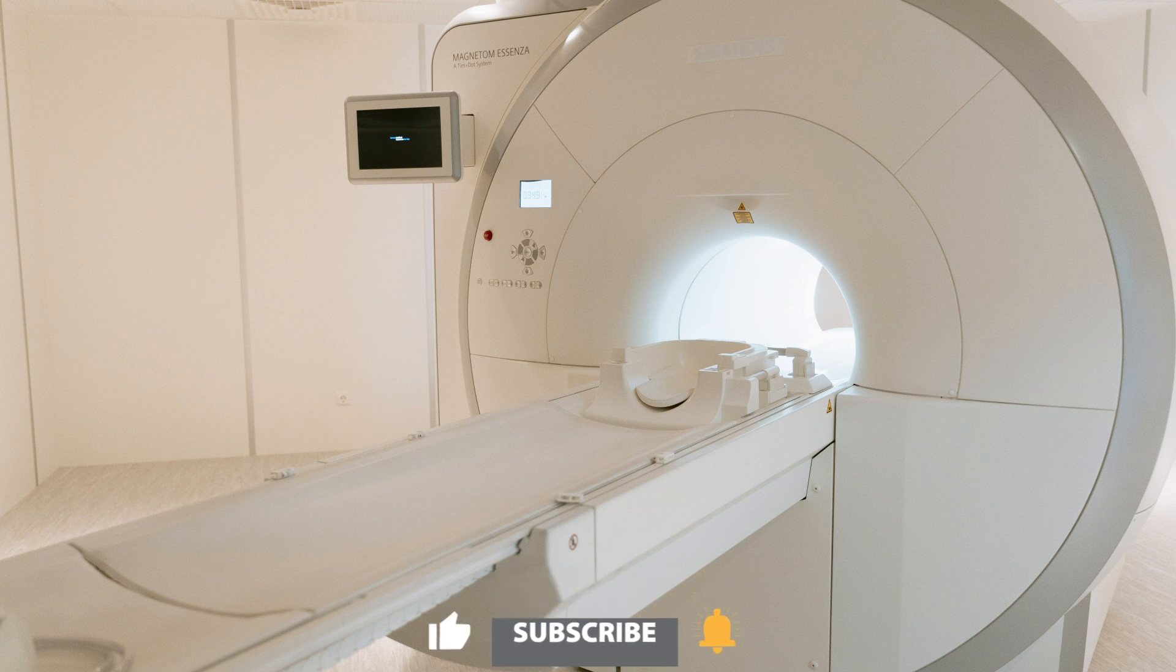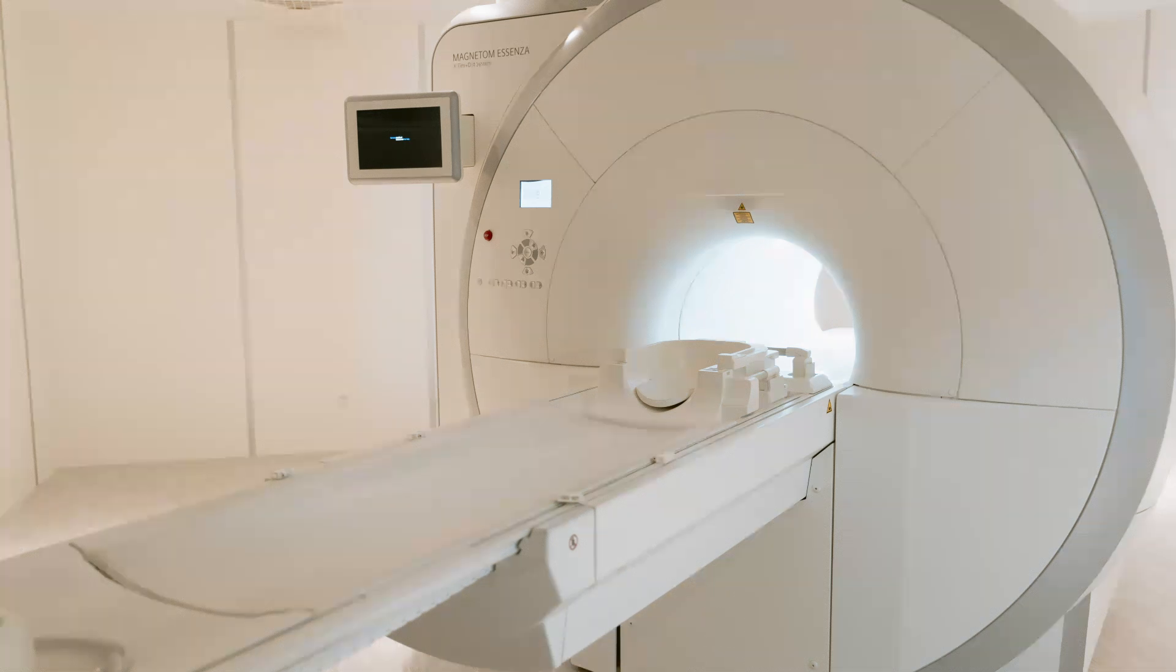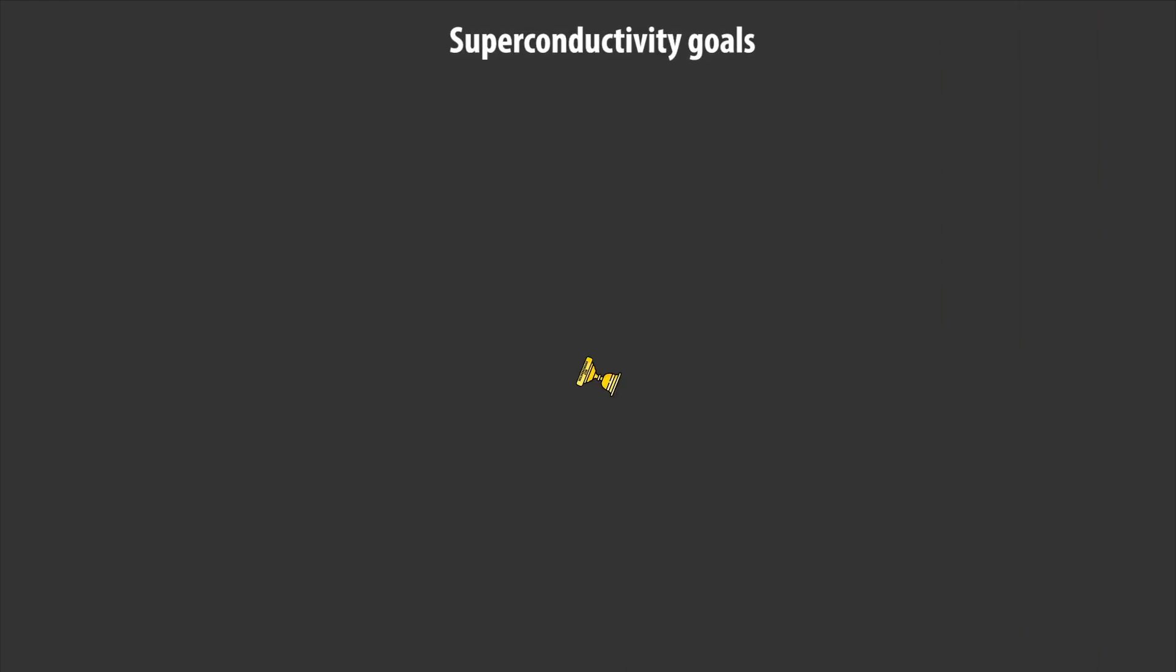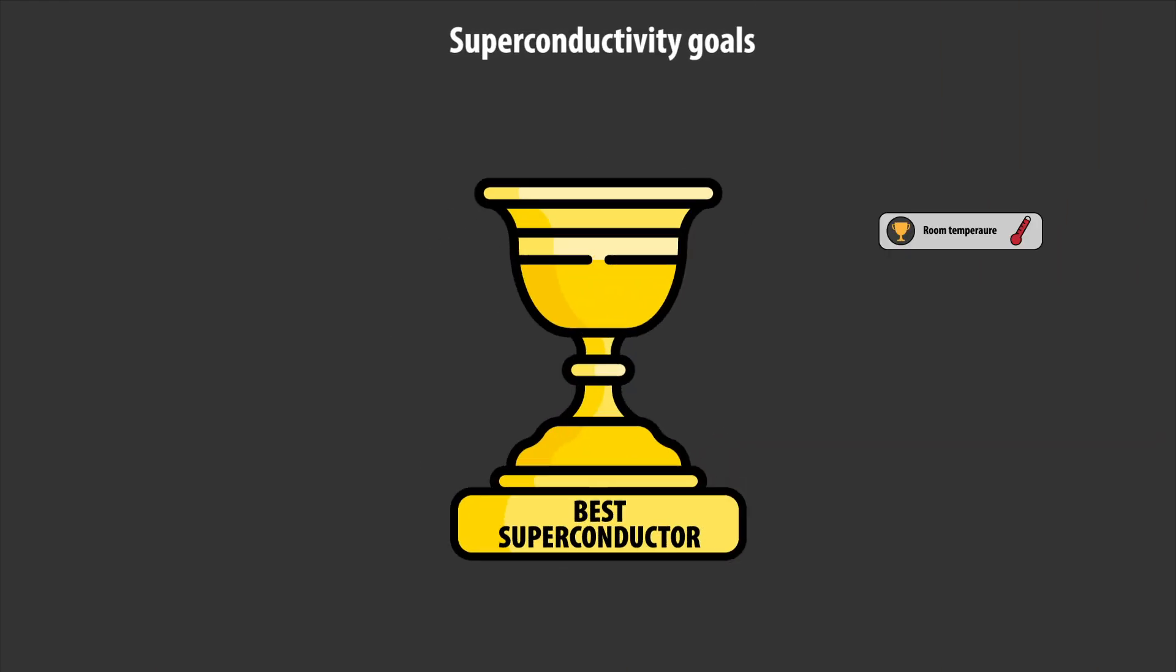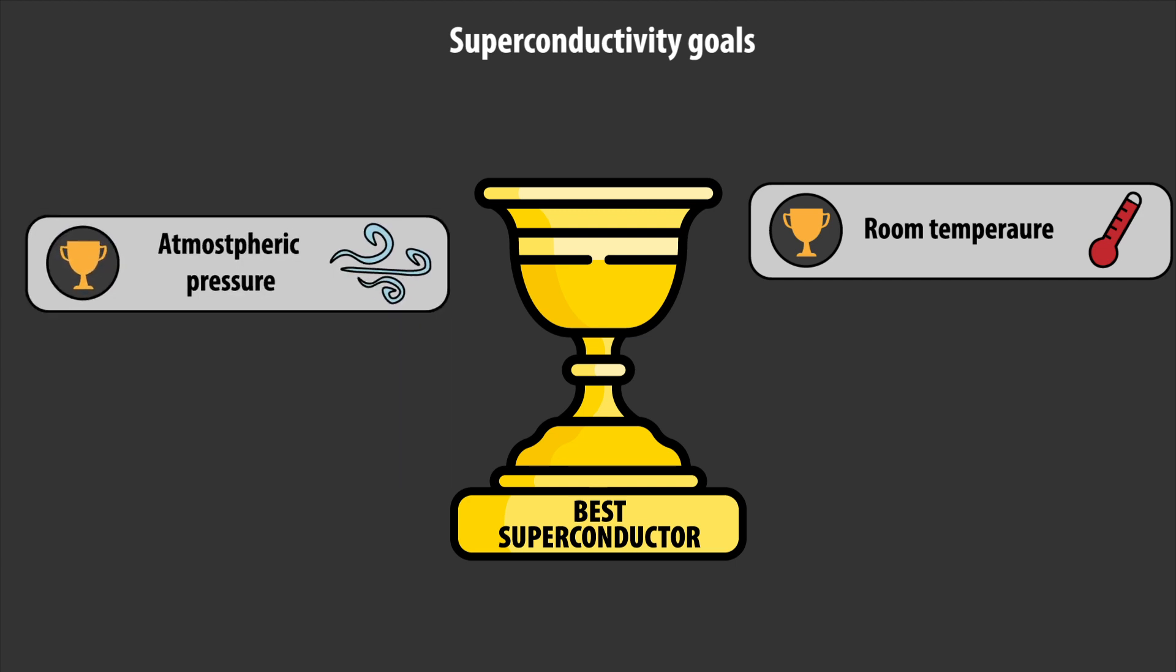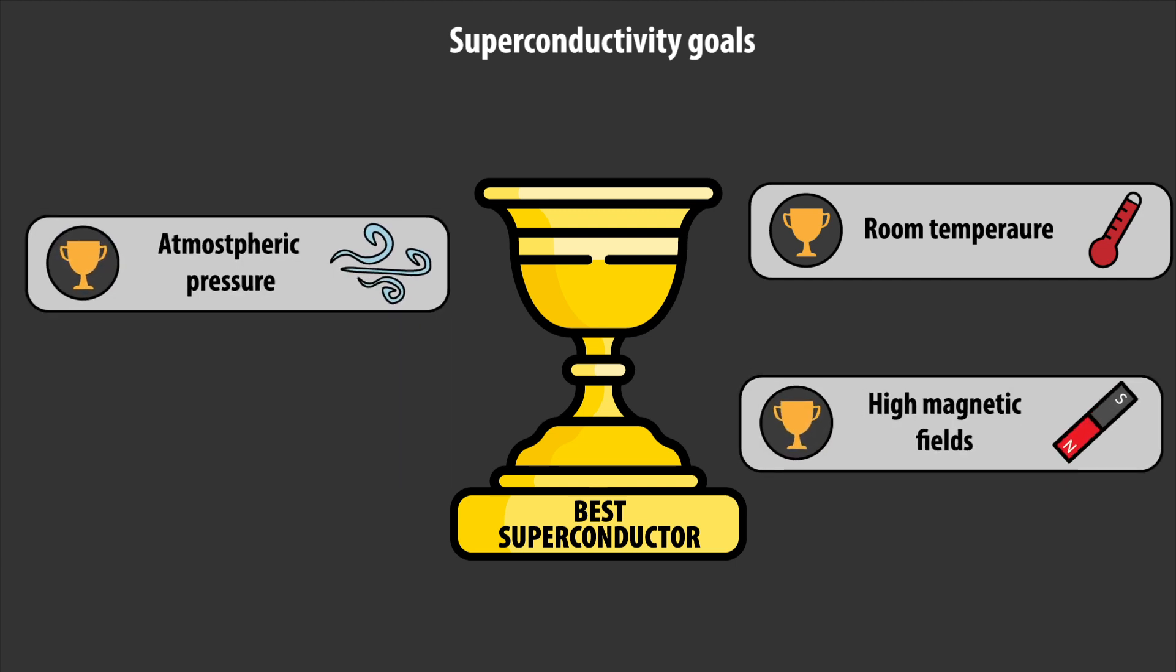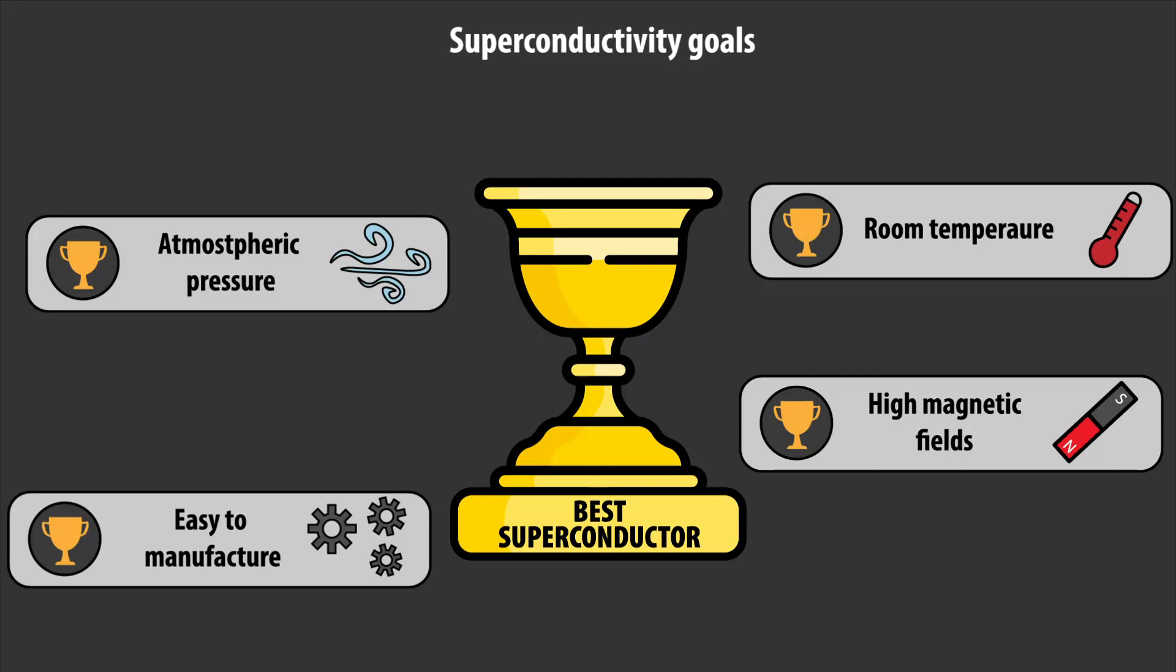The holy grail in this pursuit would be a room temperature, ambient-condition superconductor. Likewise, finding superconductors that can remain superconducting even under extremely large magnetic fields is a constant pursuit. Both goals have thus far been elusive. But one way forward may be to use what is called a topological superconductor.